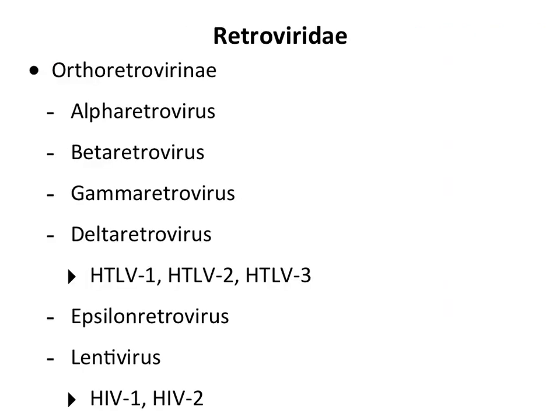Here's the retrovirus family. It's the family Retroviridae, with a subfamily Orthoretrovirinae and a number of genera: alpha, beta, gamma, delta retroviruses. The lentivirus genus contains HIV-1 and HIV-2 — there are two human immunodeficiency viruses. The other human retroviruses are within the delta retrovirus genus, called HTLV-1, 2, and 3.